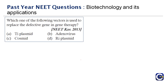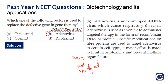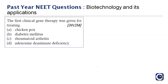Next question: which one of the following vectors is used to replace the defective gene in gene therapy? The four options are cosmid, Ri, Ti plasmid, and adenovirus. The right answer is adenovirus — a non-enveloped double-stranded DNA virus that causes respiratory disease. Adenovirus is used as a vehicle to administer targeted therapy in the form of recombinant DNA, with protein modifications to target specific cell types.